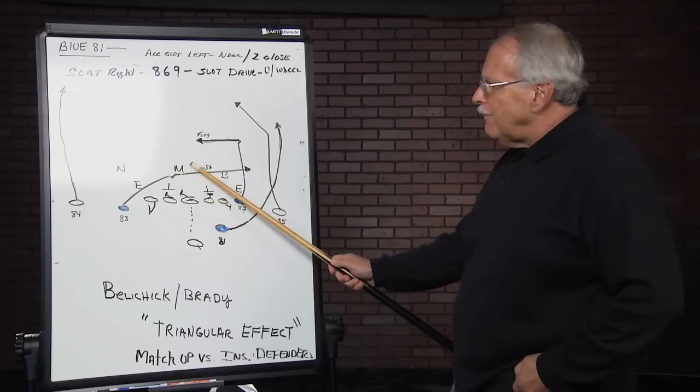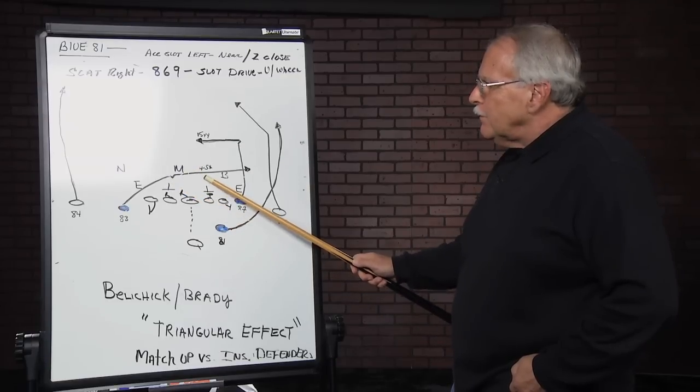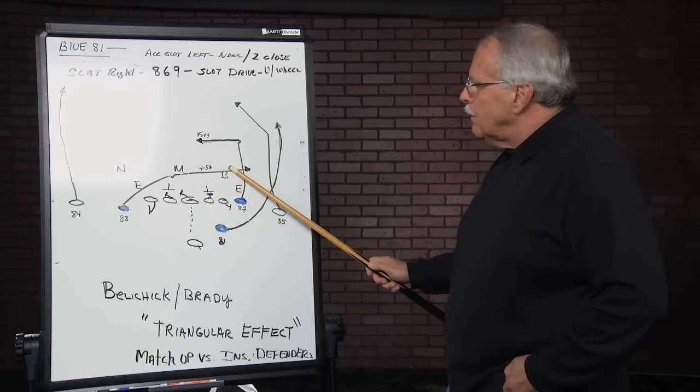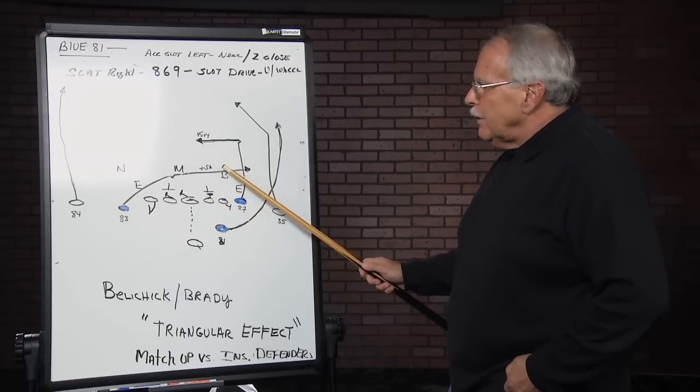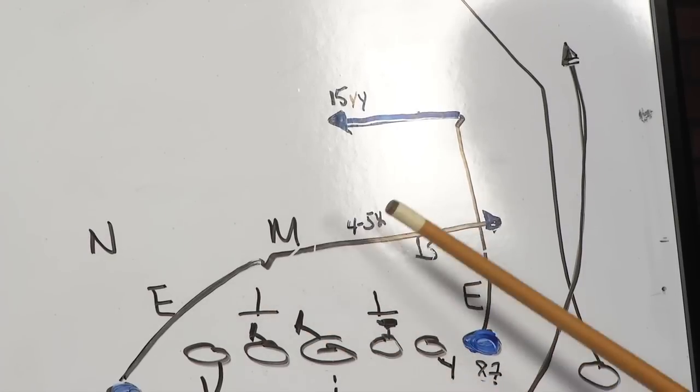Welker has a drive or runaway route here. If he's manned from the outside and he doesn't have help, the ball's going to Welker. If someone brackets Welker in here, we go to the third option, which is Gronkowski.